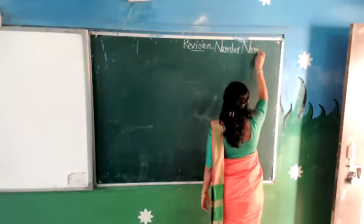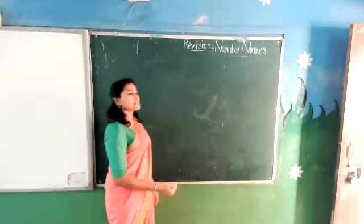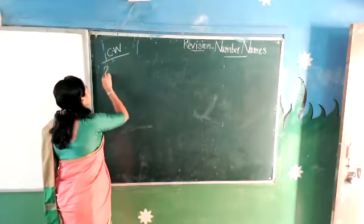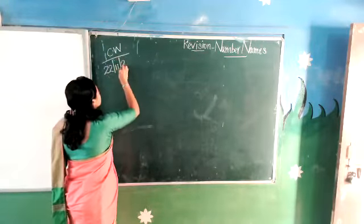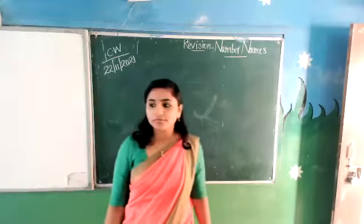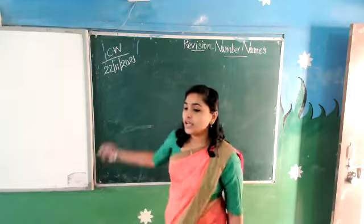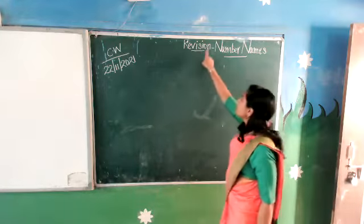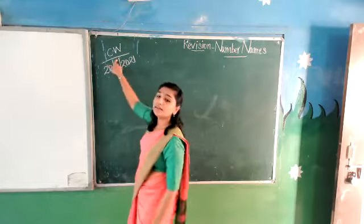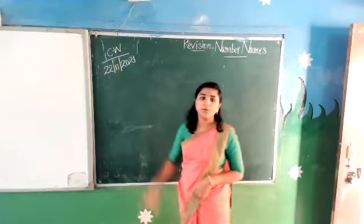Today we will revise the topic number names. Write the CW date. You have to write the heading: Revision Number Names. Write the date — CW and date.